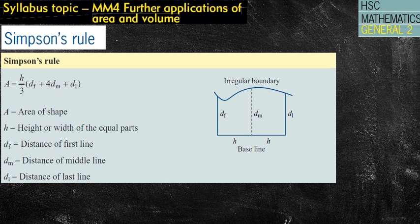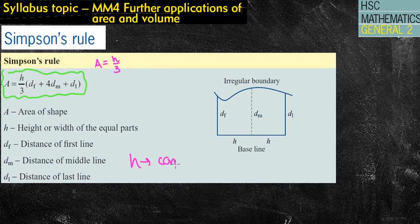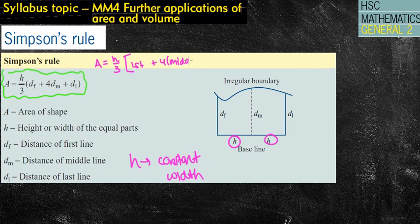Simpson's Rule — if you have not seen this rule before, it's actually not too hard. It might look complicated, but it's pretty easy. Basically, you are given this rule. I look at it as H over 3, where H is the constant width — the same width of your particular shape. Then we look at the first value, plus 4 times the middle value, plus the last value. DF is the distance of the first, DM is distance of the middle, and DL is distance of the last.